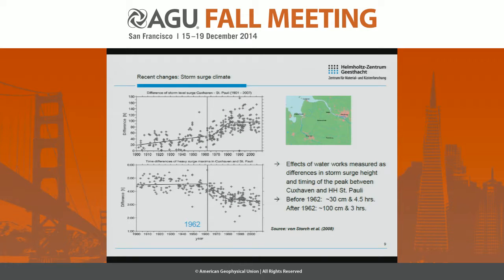The effects of the water works could also be measured by the differences in storm surge height and timing of the peak between the mouth of the estuary at Cuxhaven and Hamburg St. Pauli. The upper graph shows the difference in storm surge levels between Cuxhaven and St. Pauli, and the lower one the difference in timing of the peak. Before 1962, we had a difference in storm surge peak heights of about 30 centimeters and a difference in timing of about four and a half hours. Nowadays, we have about 100 centimeters difference in the storm surge peak and a difference of three hours.